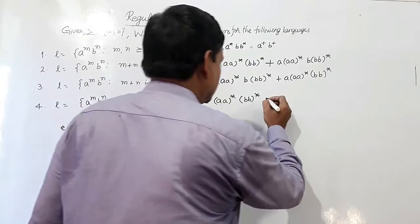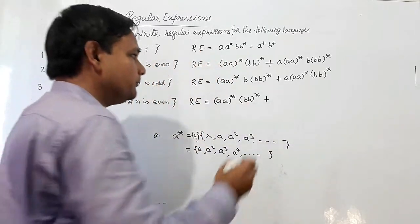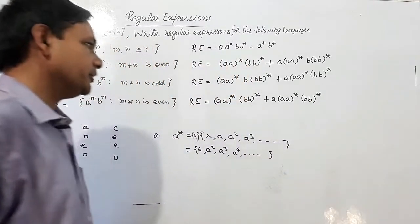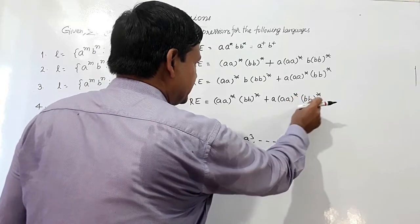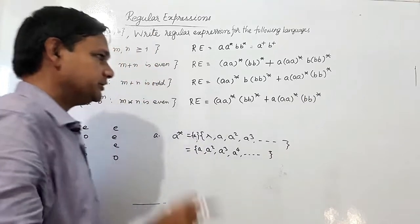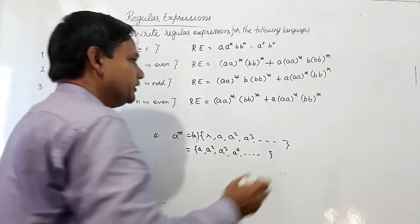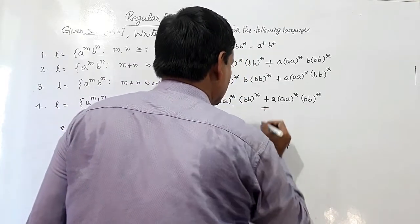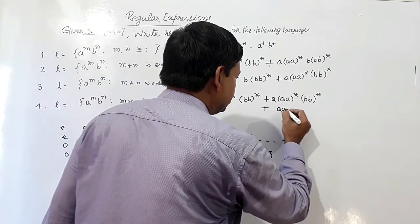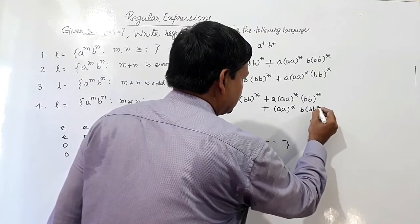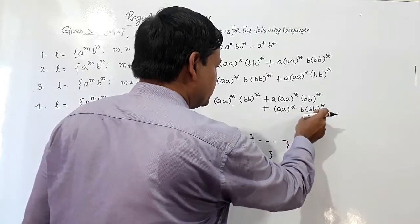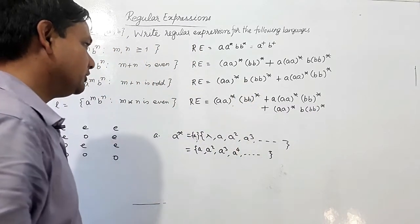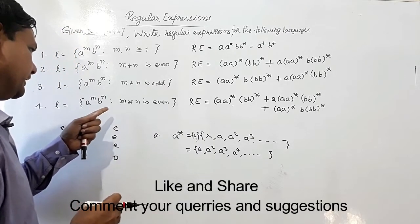If a's are odd, I write a(aa)* concatenated with (bb)*. For example, a(aa)* with (bb)* gives a-cubed times b-squared, and three times two equals six, which is even. For the case of odd number of b's with even number of a's: (aa)* concatenated with b(bb)*. For instance, two times three equals six, or two times five equals ten. So the complete regular expression for L = a^m b^n where m times n is even uses union of all three cases.